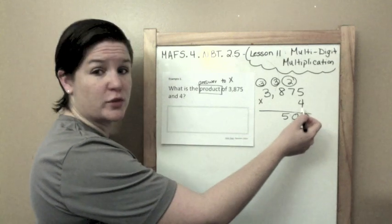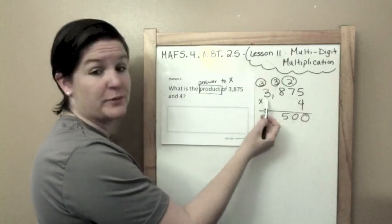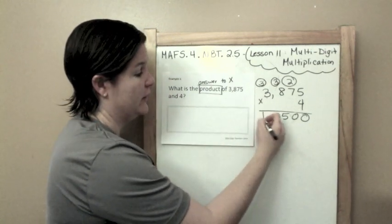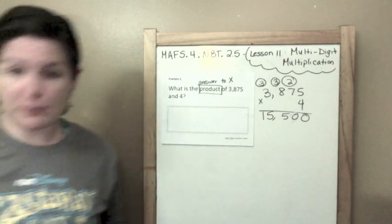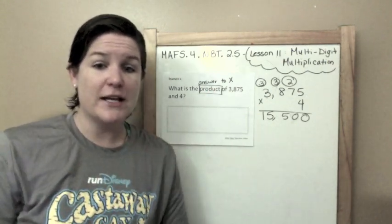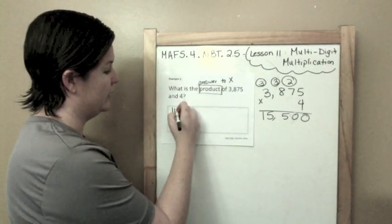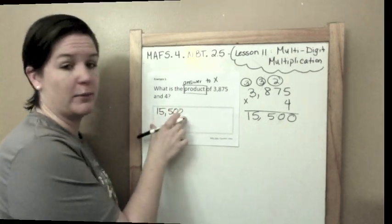3 times 4 is 12, actually, 4 times 3 is 12 plus 3 is 15. So, my product, my answer to my multiplication statement is 15,500. Only that number goes into the box.